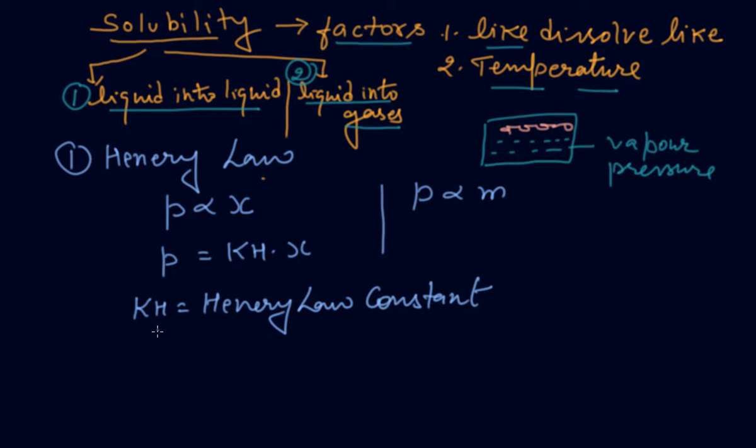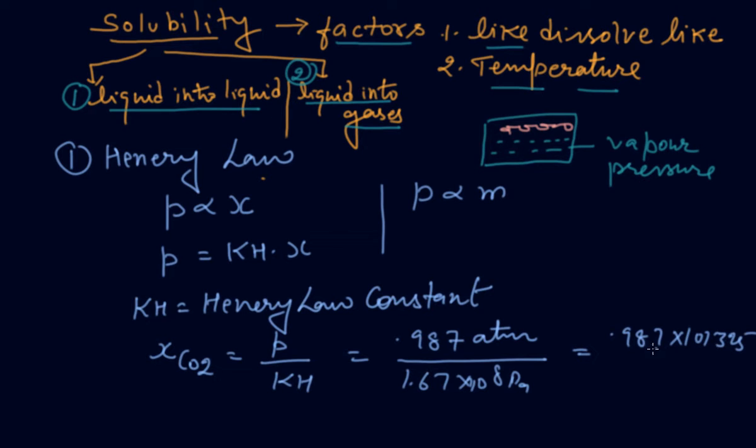If we would like to find the mole fraction of any gas, suppose CO2, then x CO2 will be pressure divided by the Henry constant. When pressure is not given, we take 0.987 atm or bar. Suppose the Henry constant is given as 1.67×10^8 Pascal, then you have to convert atm into Pascal by multiplying with 101,325. If both are in Pascal, you will cancel them.